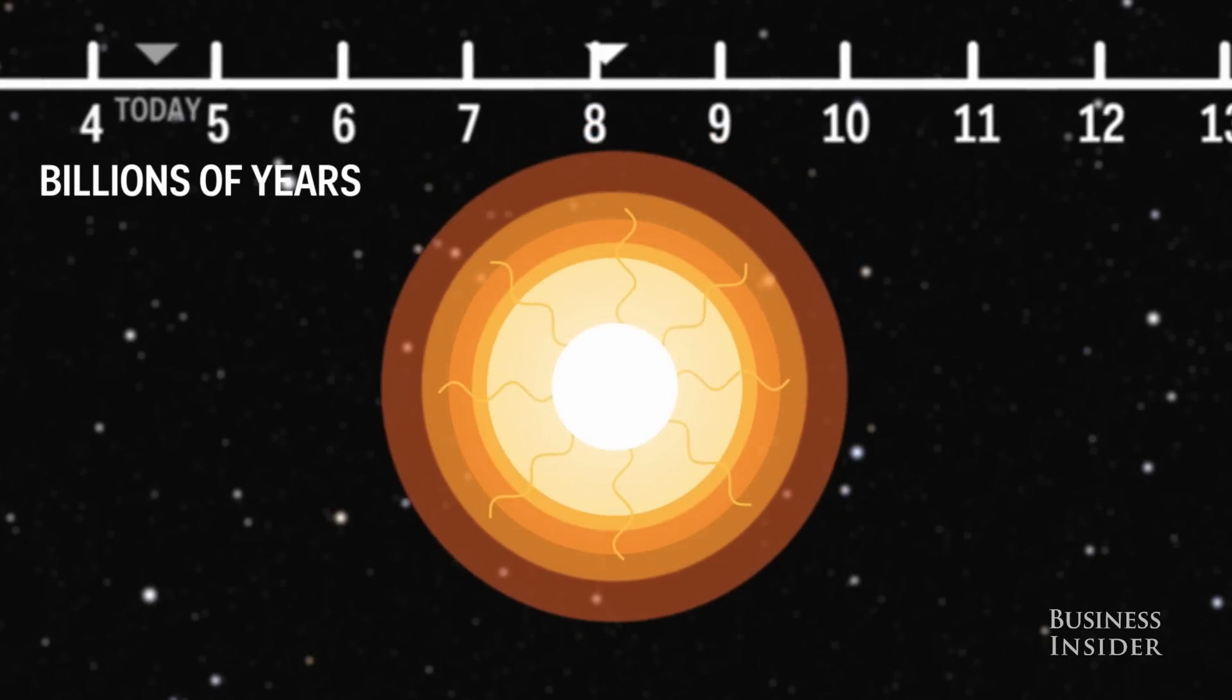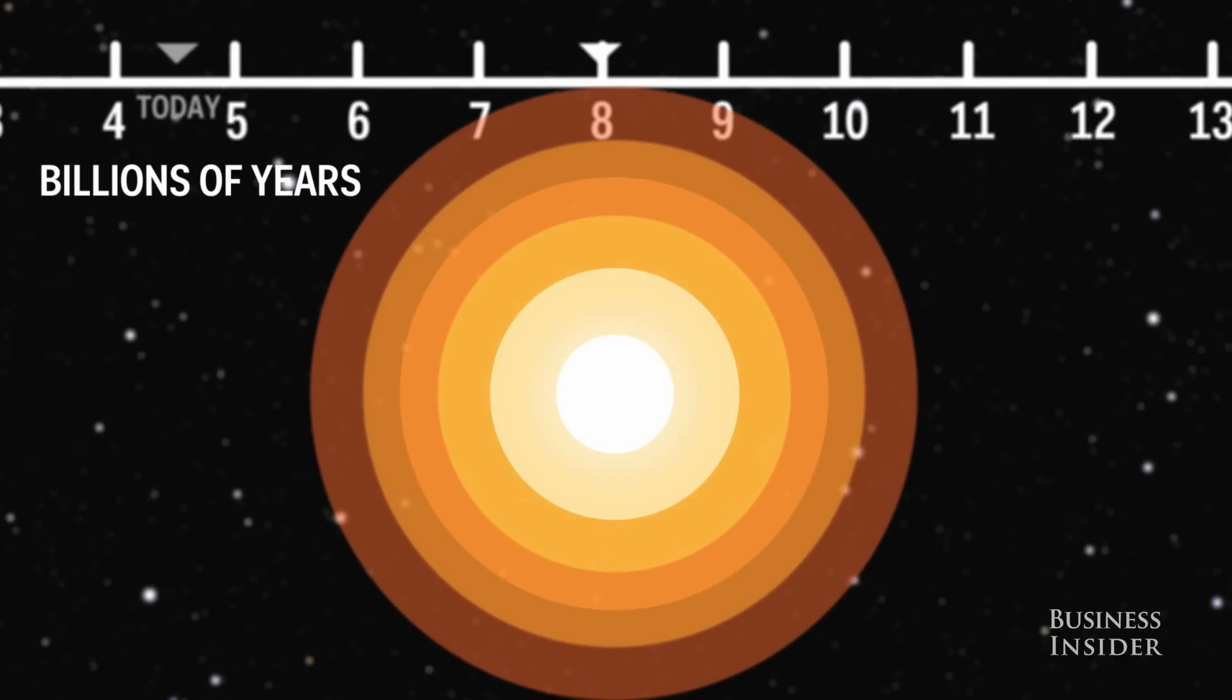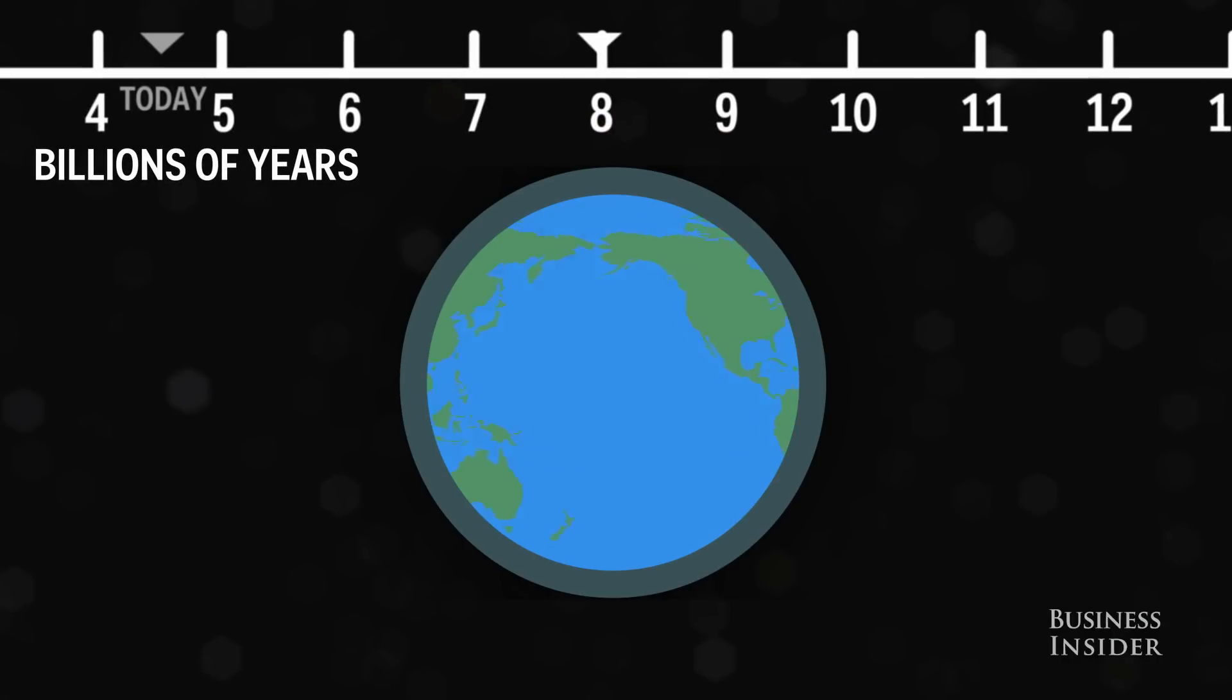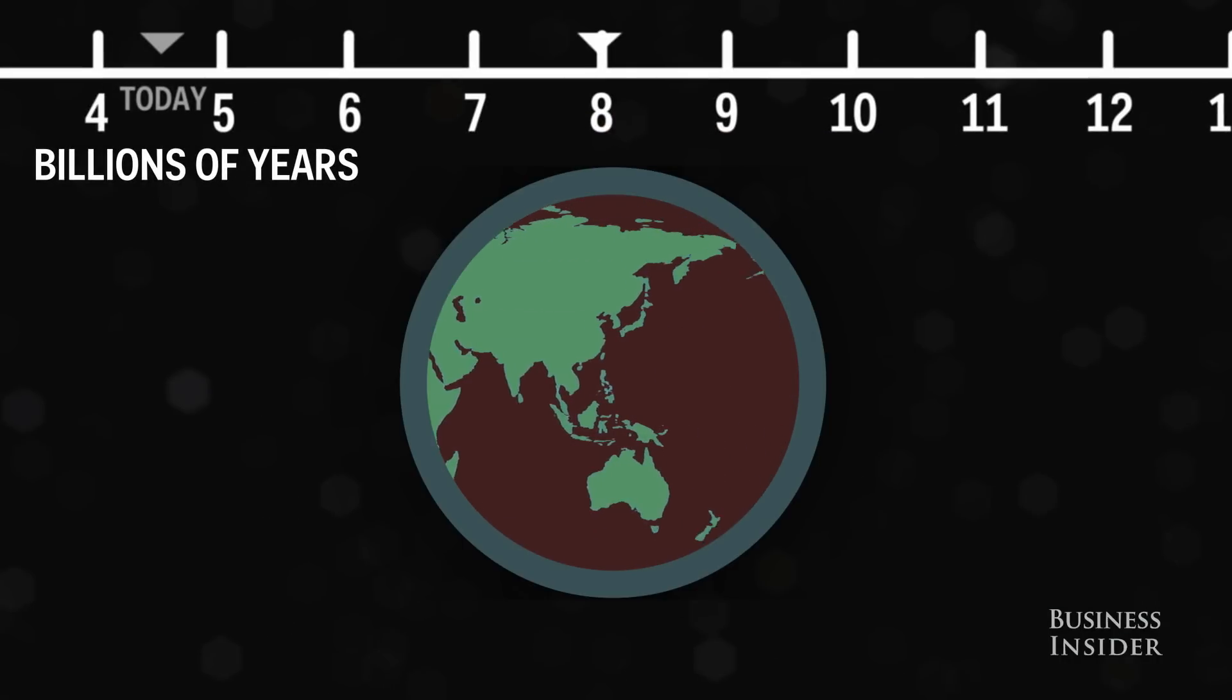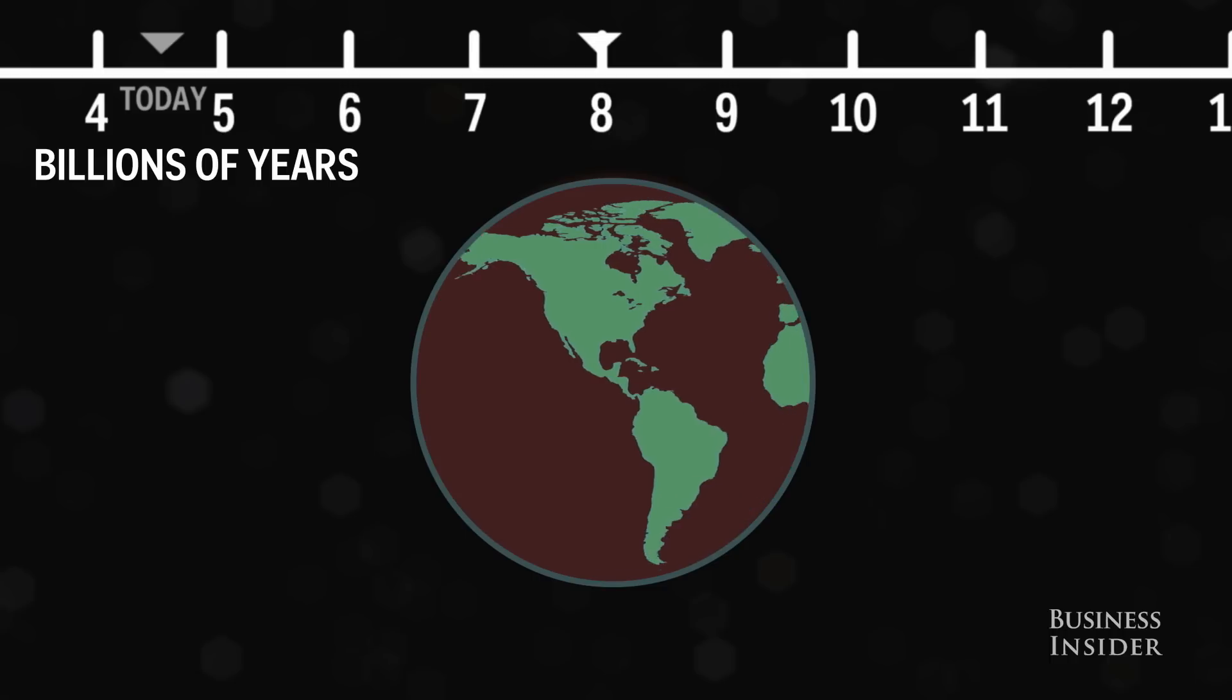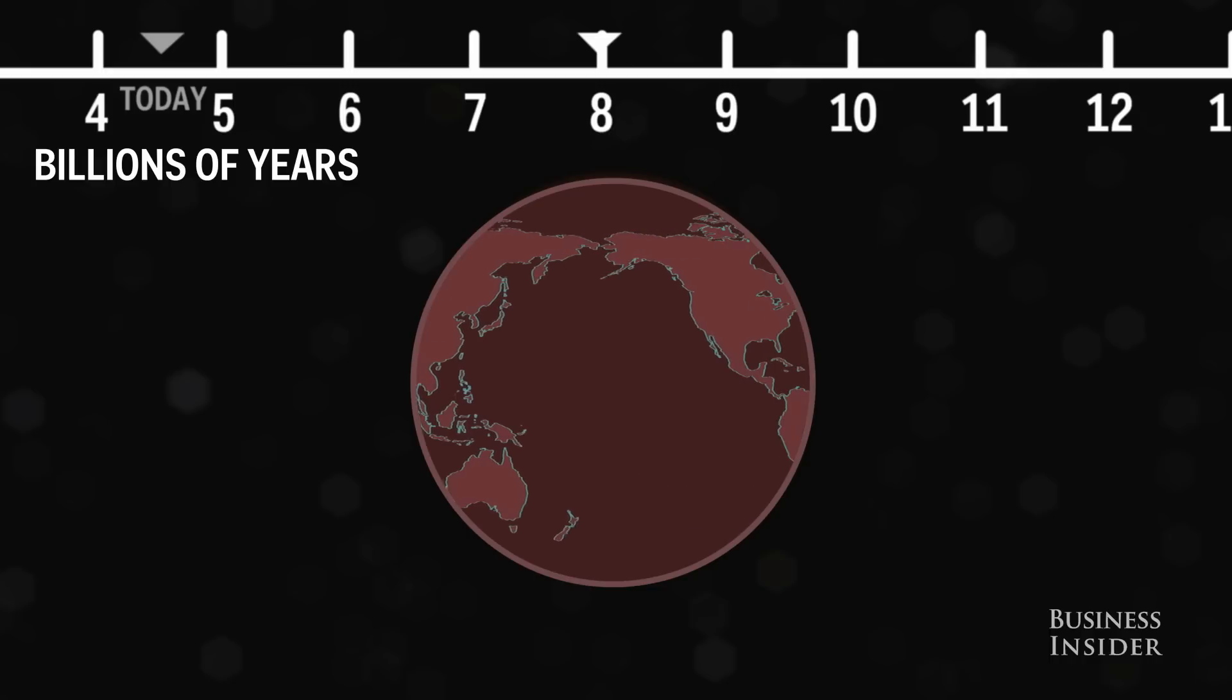In 3.5 billion years, the Sun will shine 40% brighter than today. At this point, Earth's oceans will boil, and the ice caps will permanently melt. All the moisture in the atmosphere will be lost. Life will not likely survive, and Earth will become brutally hot and dry, like Venus.